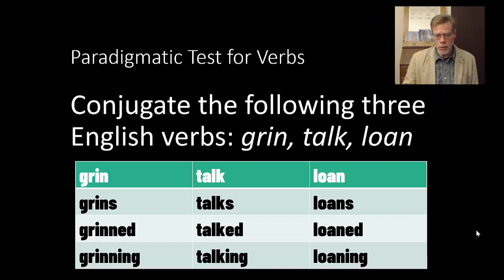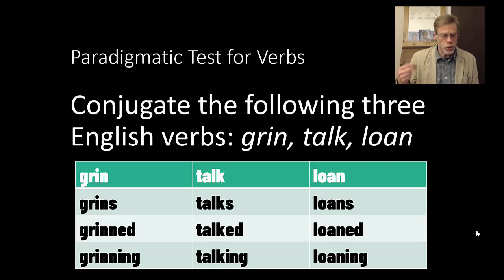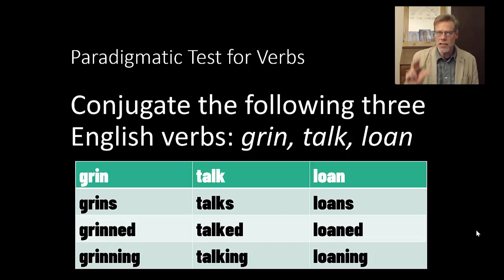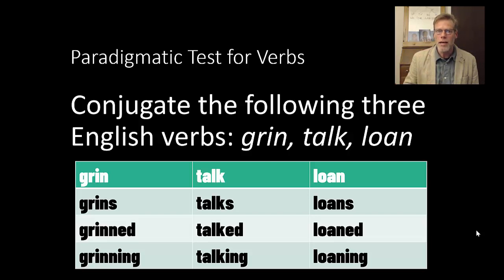Let's think about this from a verb point of view. We've got grin, talk, and loan. We've got grins, grinned, grinning; talks, talked, talking; loans, loaned, loaning. That's our paradigm — each column represents a paradigm, and that is where we get this idea of paradigmatic.